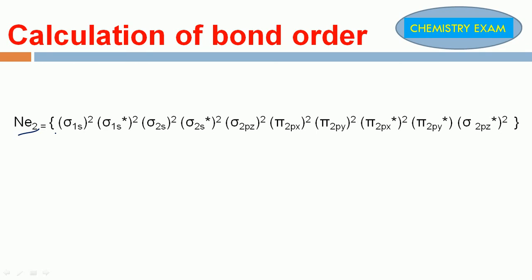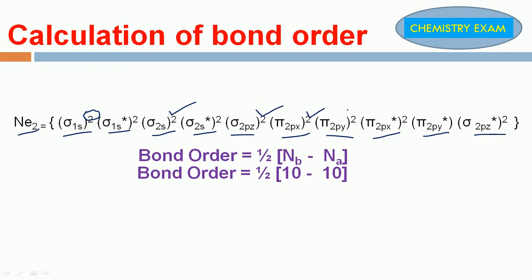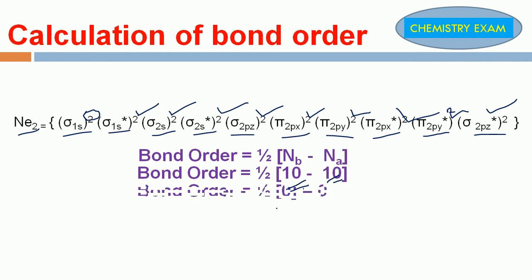Next, Ne₂. What is the electronic configuration for this molecule? Sigma 1s², sigma star 1s², sigma 2s², sigma star 2s², sigma 2pz², pi 2px², pi 2py², pi star 2px², pi star 2py², sigma star 2pz². Bonding electrons: 10. Anti-bonding electrons: 10. So bond order equals 1/2 into (10 minus 10) equals 0. The bond order for Ne₂ molecule is 0.